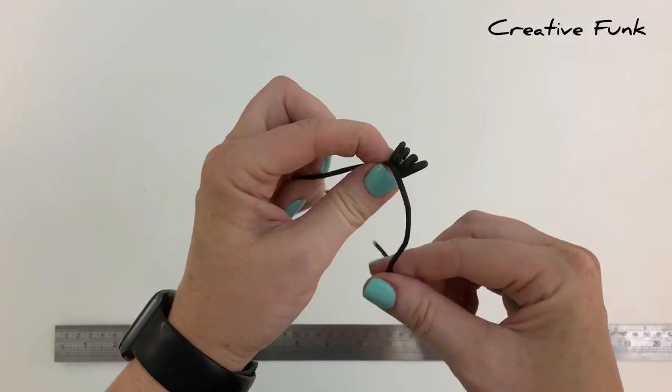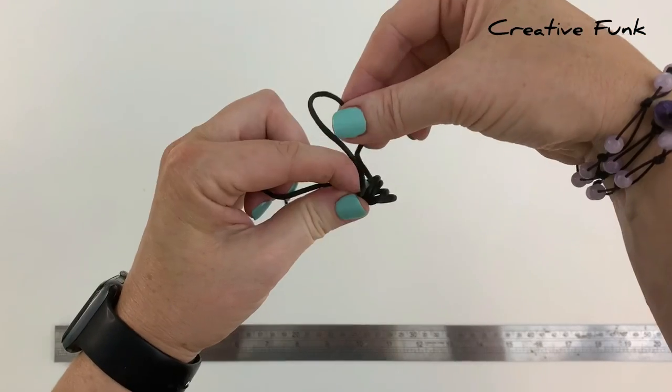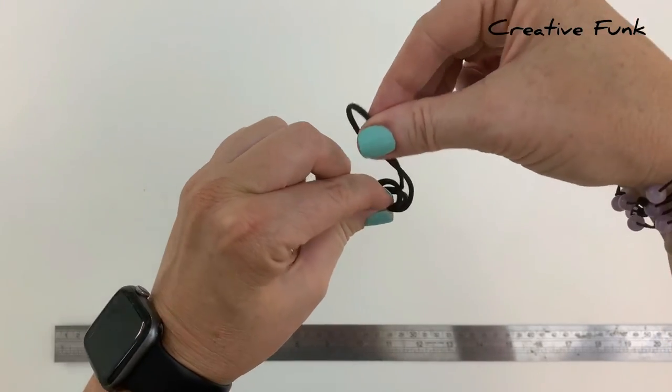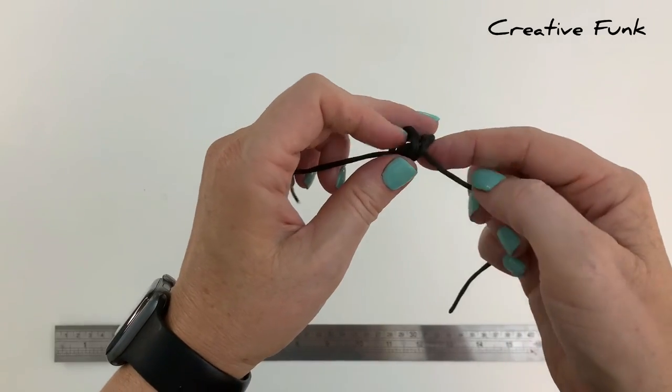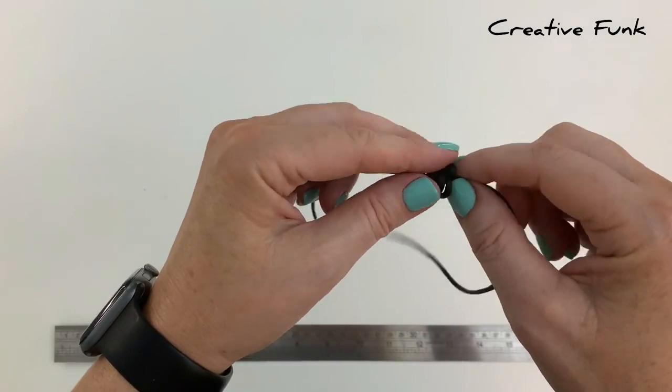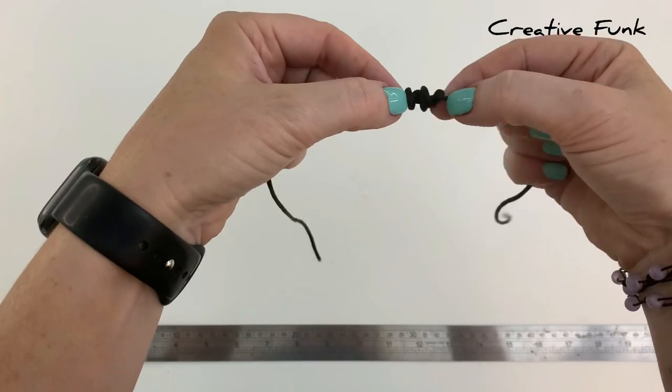With your tail end here, bring this around and poke it down all four of your loops, pulling it out the right hand side and gently working your knot down so it's nice and tight and tidy.